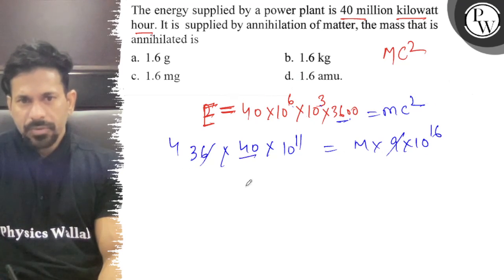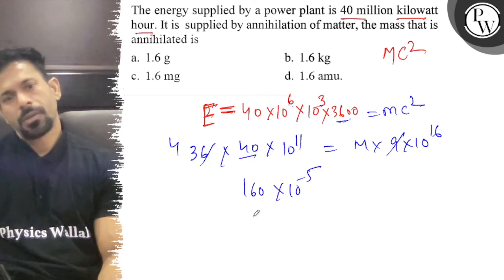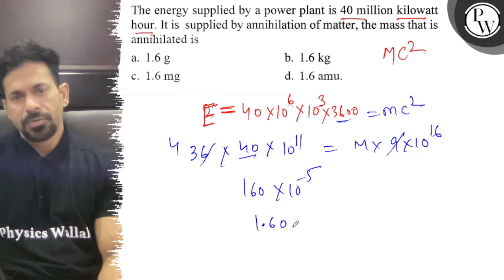This is 4 times. This is 160×10⁻⁵. So 1.60×10⁻³. That is equal to M.